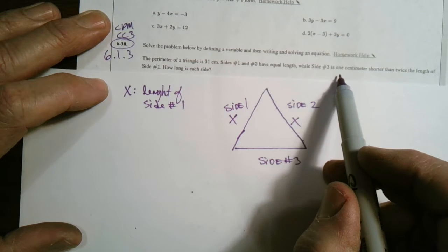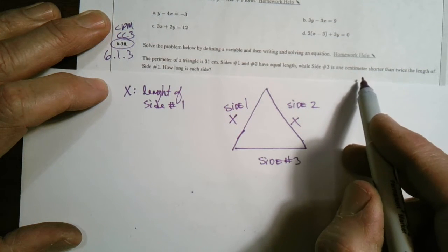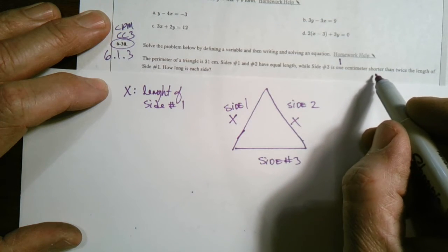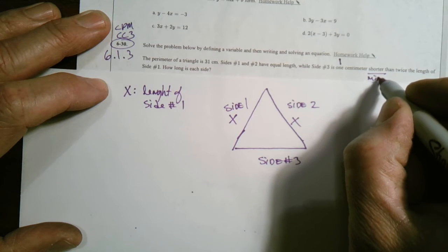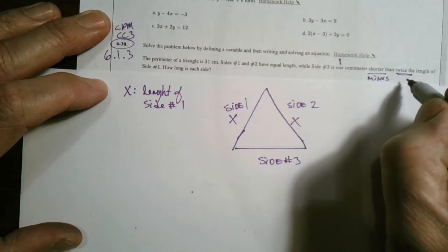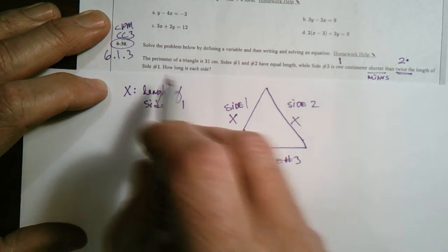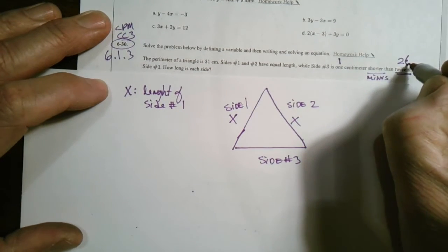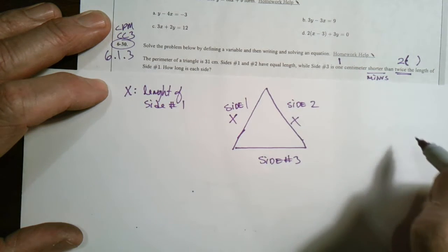And then it says that side 3 is 1 centimeter shorter. So I know there's going to be some subtraction. Shorter is going to be minus. Then twice, and what is twice telling me? Twice usually means 2 times the length of side 1. So I have to multiply by 2 and then subtract 1.